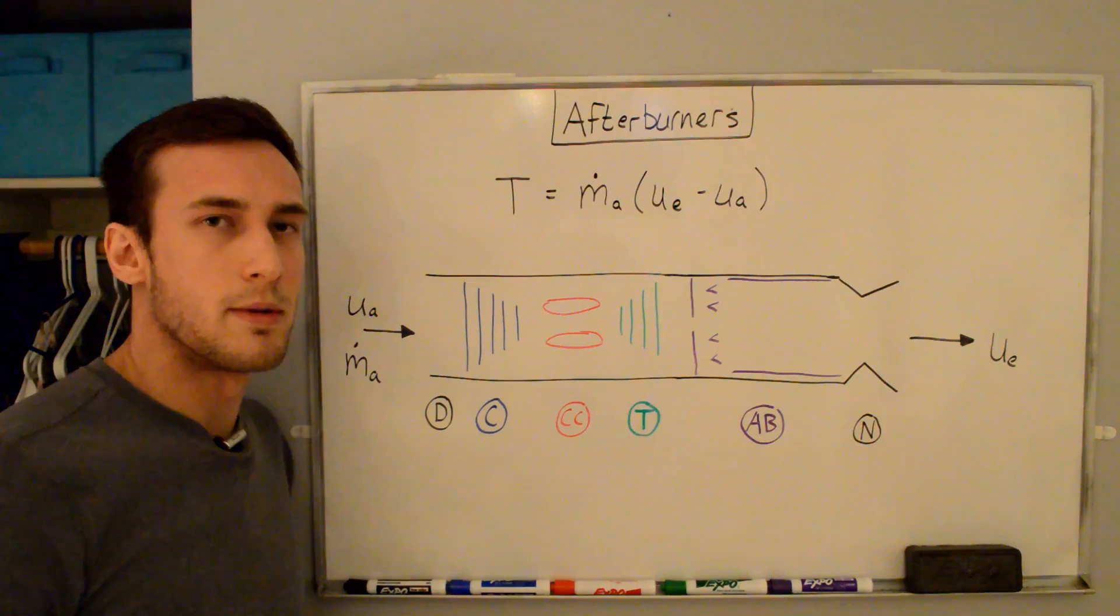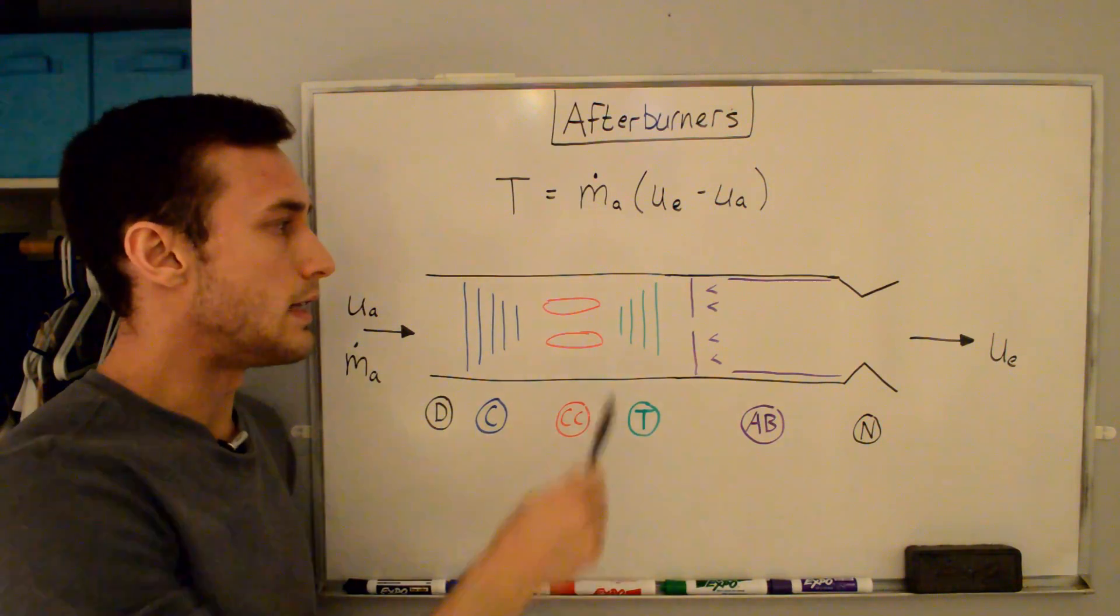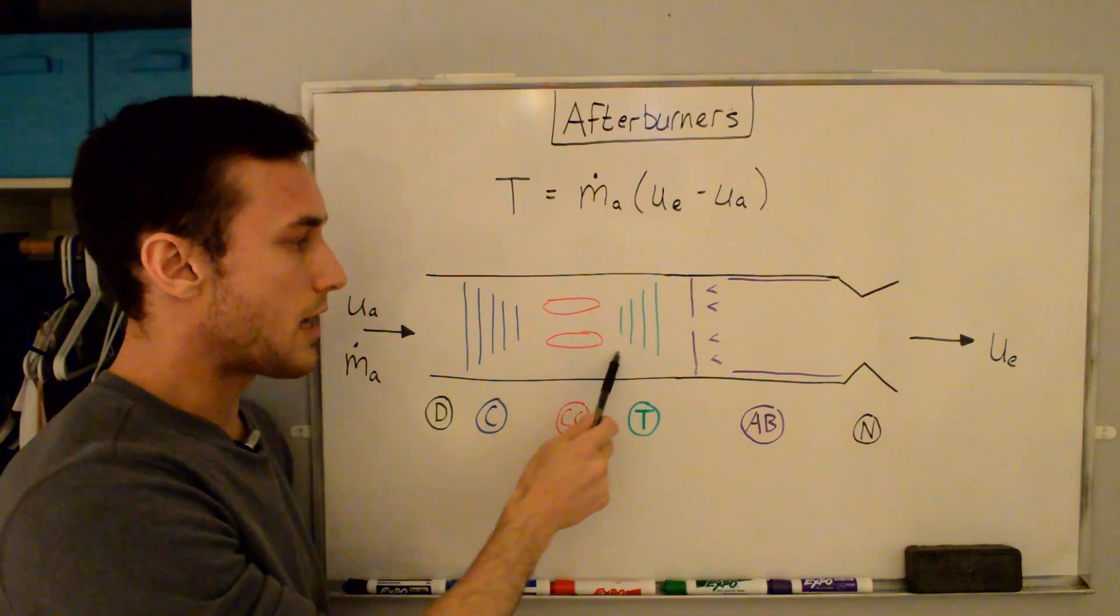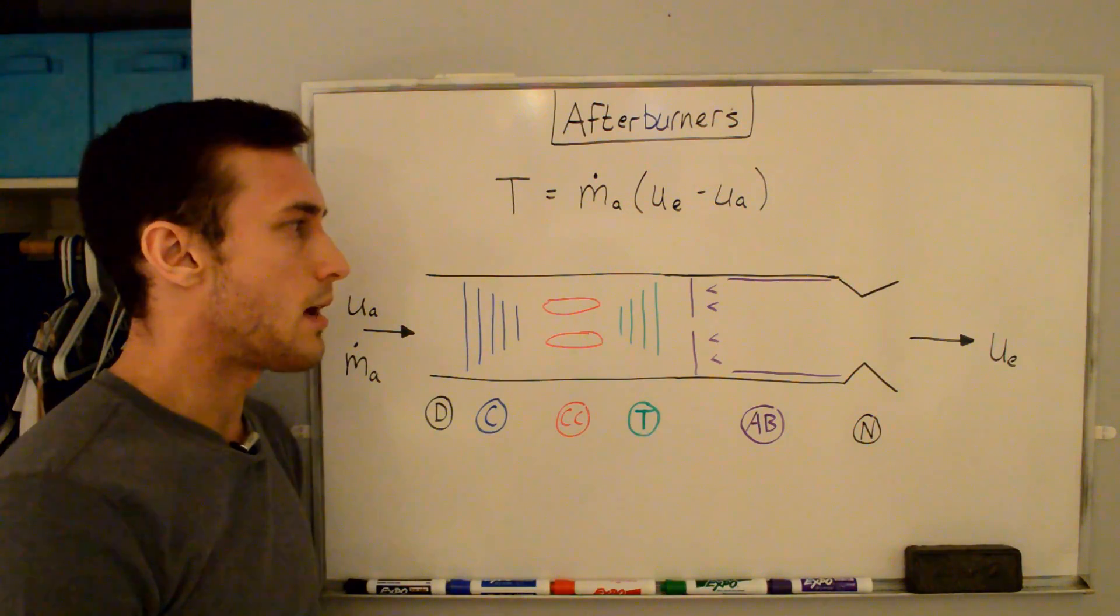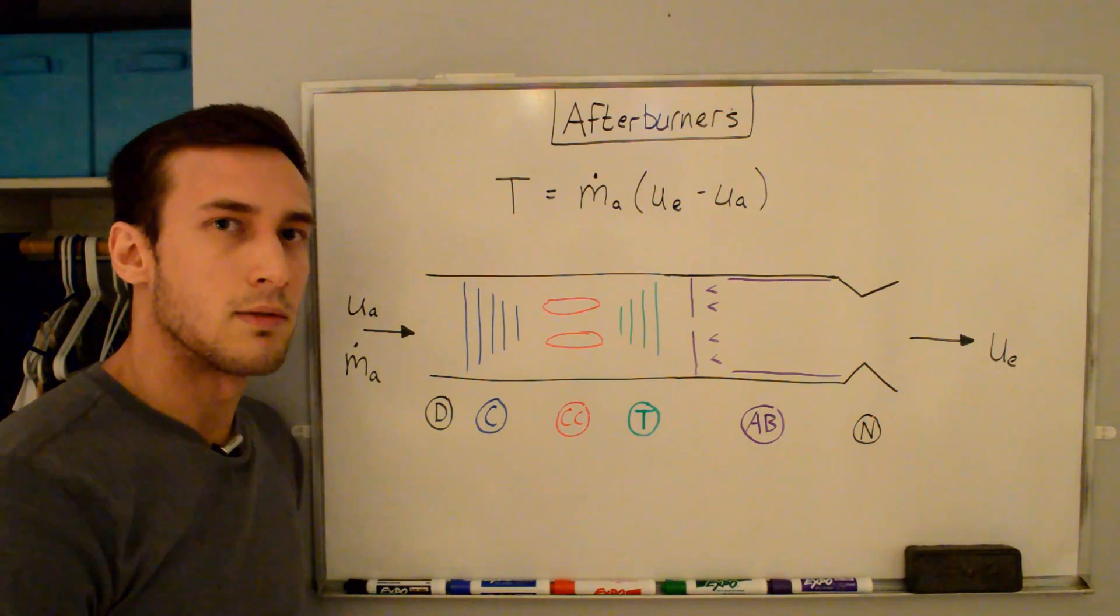Due to temperature limitations of the materials used in jet engines, particularly the turbine blades that are located just downstream of the combustion chamber, engines operate fuel lean to keep the temperature at safe levels.